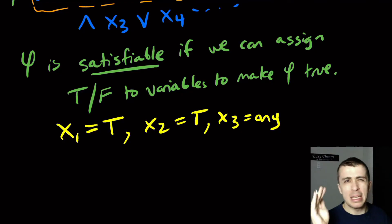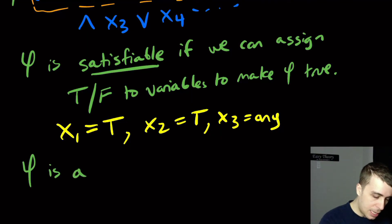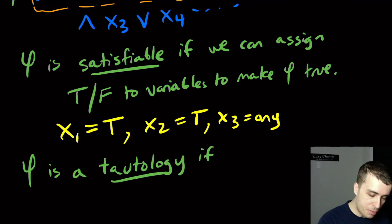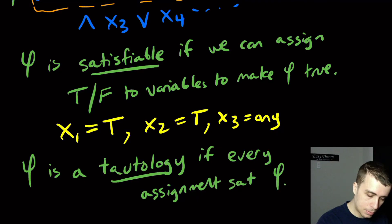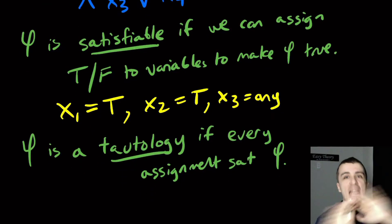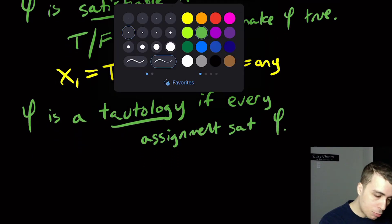So there are different notions of this. Sometimes we don't care about whether it's just satisfiable, we want a stronger condition. Sometimes we say that psi is a tautology if every assignment satisfies it. So here we just wonder if there's any assignment that causes the formula to be true.